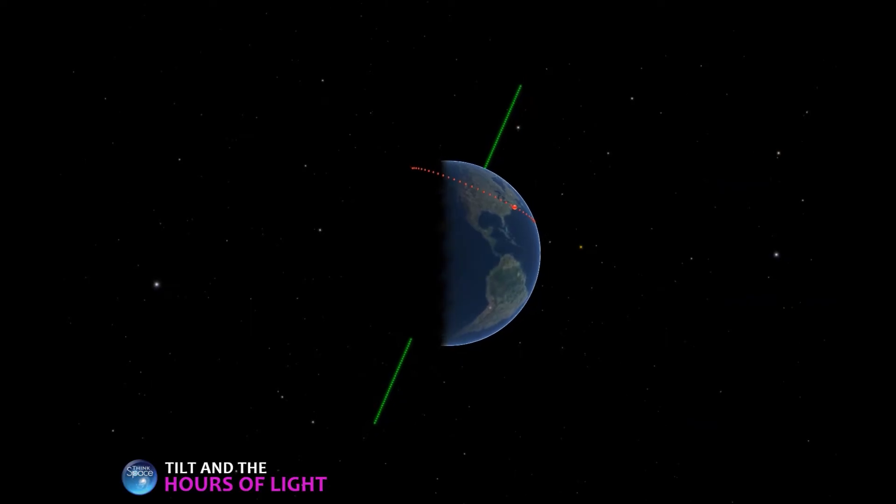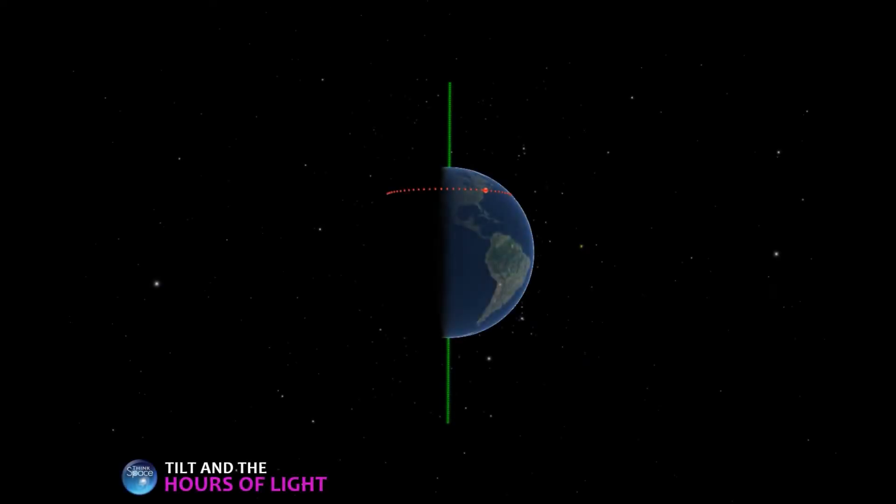What would it look like if the Earth weren't tilted? Well, pretty much like this. The rotation axis would point straight up and down, evenly splitting the line that divides day and night, or the terminator line if you want to get fancy.